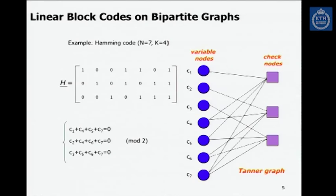Another way to describe the same constraint is to give a bipartite graph. On the left, we represent the variable nodes — each associated to one bit of the code word. On the right, we represent the check nodes — each representing a row of the matrix h, or equivalently one equation in the constraint system. So the first check node represents the first row of h, or the first equation.